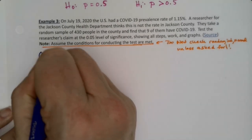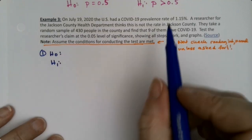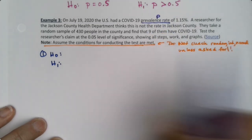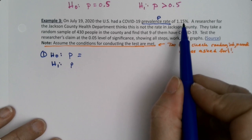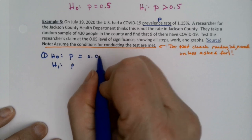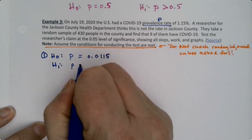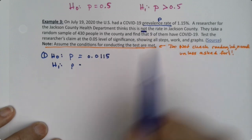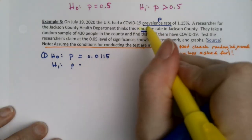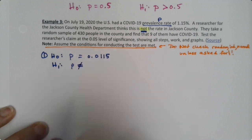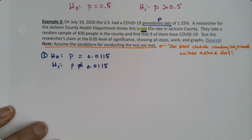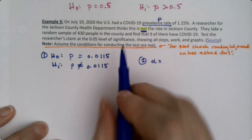Step one: we need a null hypothesis and an alternative hypothesis. It's talking about a prevalence rate—a prevalence rate will be a P, a proportion. We're going to assume that it's 1.15 percent, which is—remember you move the decimal two spots to the left—so it's 0.0115. A researcher thinks this is not the rate in Jackson County. They're not giving us a direction; they're just saying it's not that. So 'not' would be a not equal to 0.0115. Step one is done.